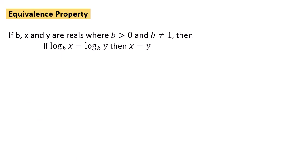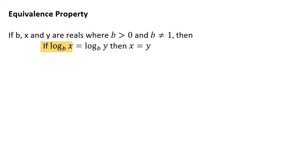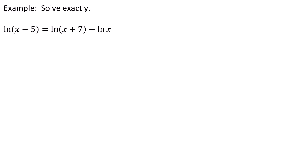The logarithmic form of the equivalence property: if b, x, and y are reals, b is positive and not 1, then log base b of x equals log base b of y implies x equals y. In this example, we solve ln(x minus 5) equals ln(x plus 7) minus ln(x). Using the quotient property, this becomes ln(x minus 5) equals ln of the quantity x plus 7 divided by x.